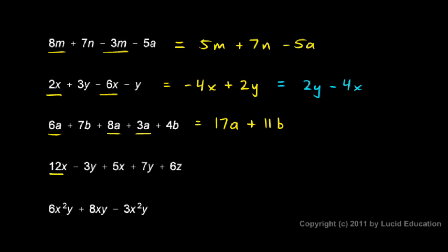Let's look down here. Here's a 12x, and there's a 5x. Okay, that's good. Those are like terms. And 12x and 5x give me 17x.